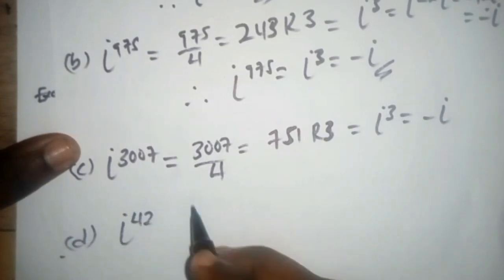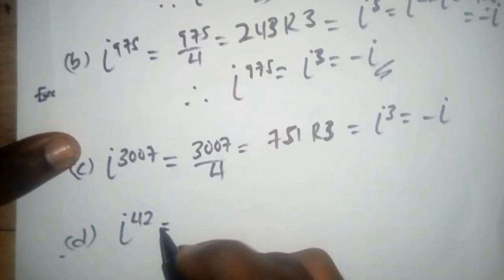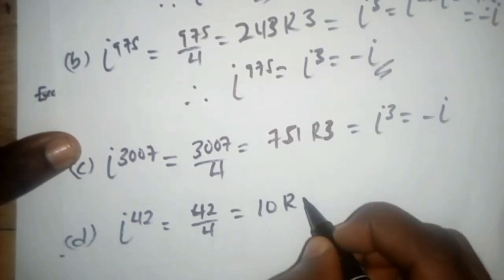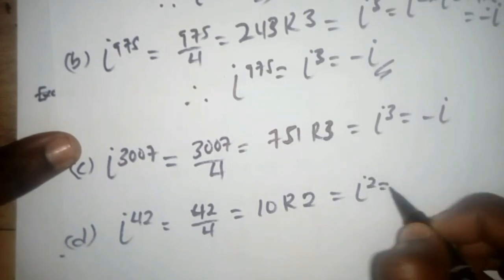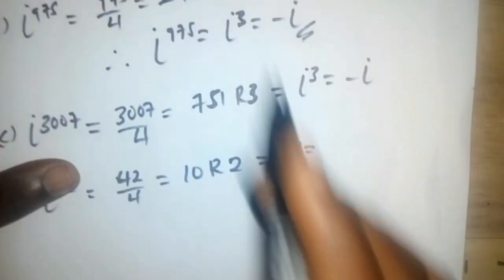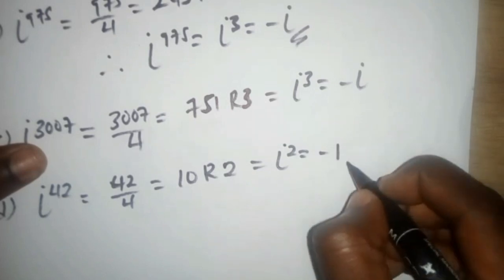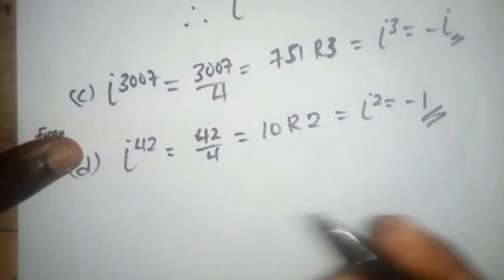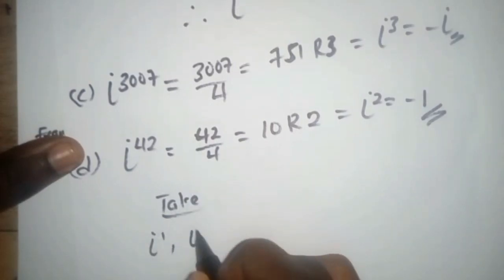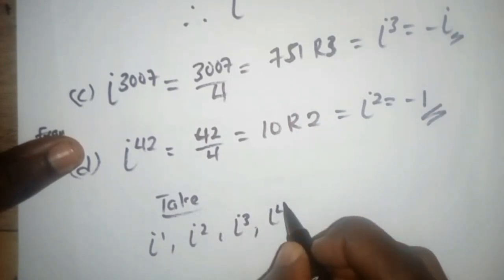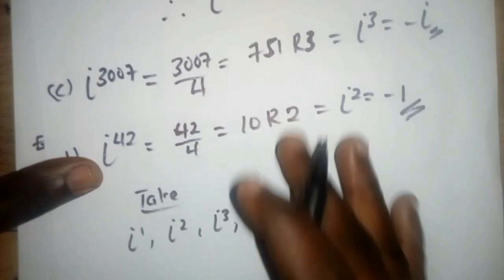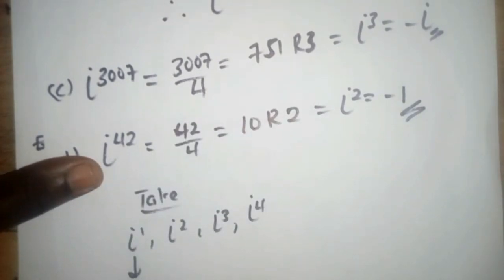You can try your answer on this. We have i to the power — once you know the four key values, you can solve any of these. Just divide the exponent by four, take the remainder, and look up the corresponding value.